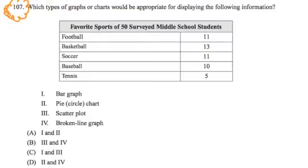Which types of graphs or charts would be appropriate for displaying the following information? And then it gives us this chart here. It has information on favorite sports of 50 surveyed middle school students. It gives us sports and the number of times the students voted for each one of those sports. And then it gives us options on how to display this information.